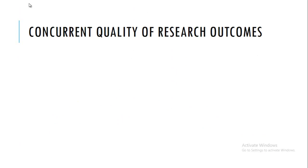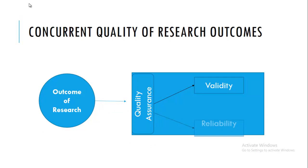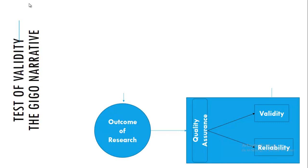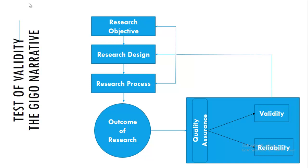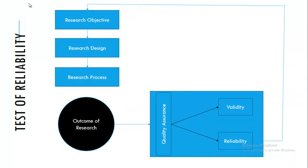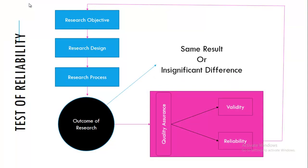Validity and reliability are concurrent outcomes on the quality of research — it is a quality assurance acid test. Test of validity follows the GIGO narrative: we validate the objectives, research designs, and the processes with which the method is applied. GIGO is Garbage In, Garbage Out. Test of reliability involves tracing from the objectives, design, processes, and outcomes. It is an iterative process, and more often we use linear regressability.